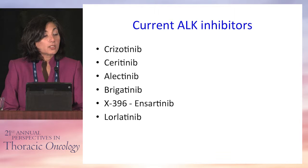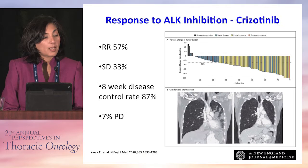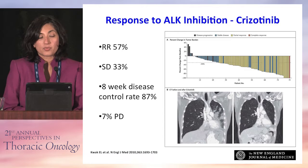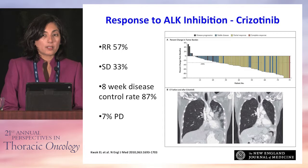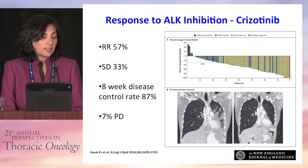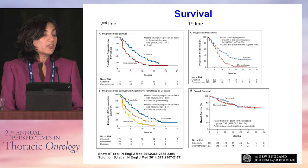These are the current available ALK inhibitors. Starting with crizotinib, the initial ALK inhibitor — crizotinib was actually originally developed as a MET inhibitor and then was known to have ALK inhibitor activity. The initial phase 1 was enriched for a population of patients who had the ALK translocation, and at that time, with really nothing else for this disease, it resulted in dramatic, quick responses in a patient population who had limited treatment options. The waterfall plot illustrates the activity with a response rate of 57% and stable disease of 33%.